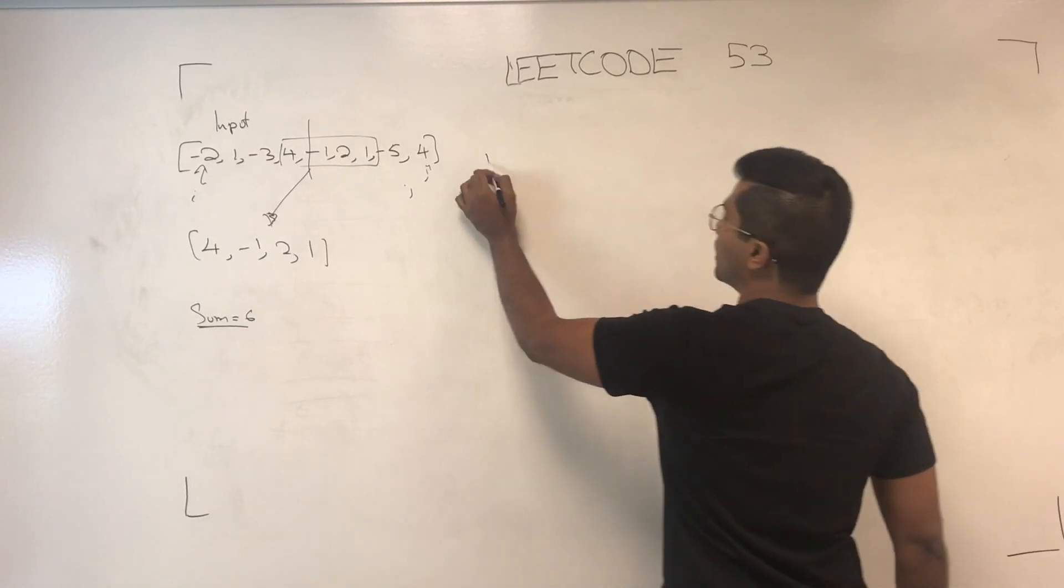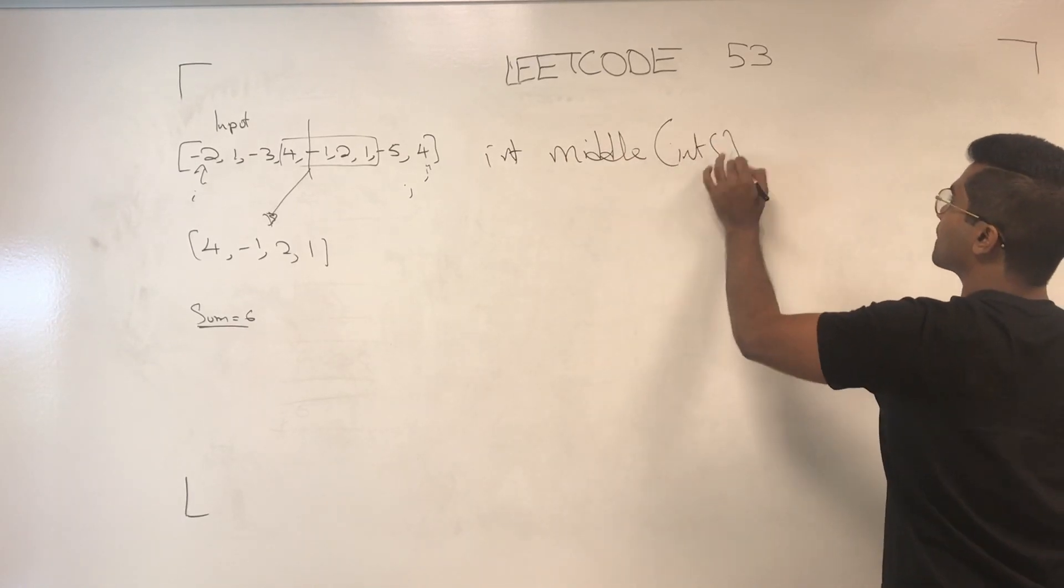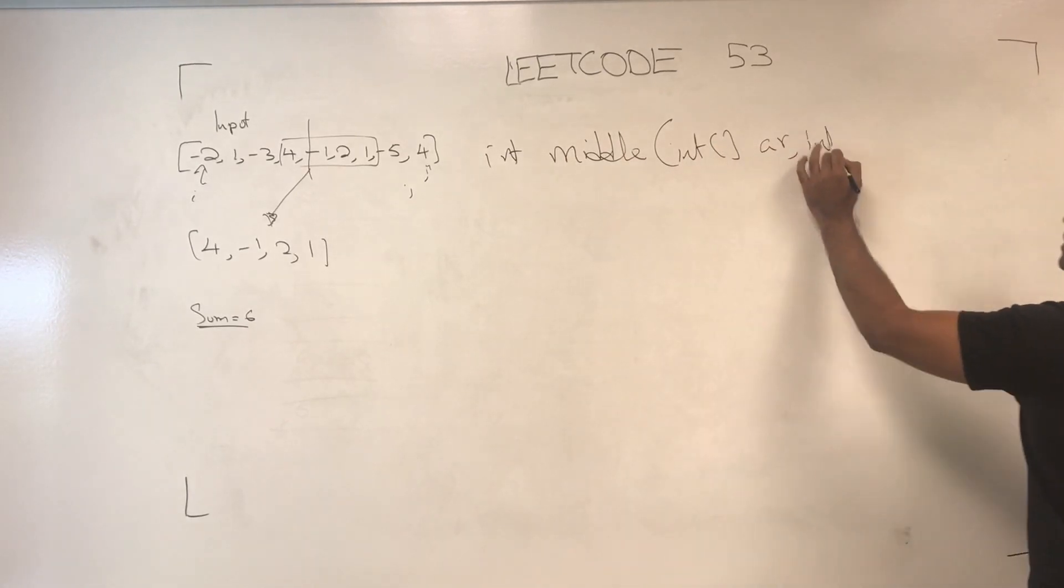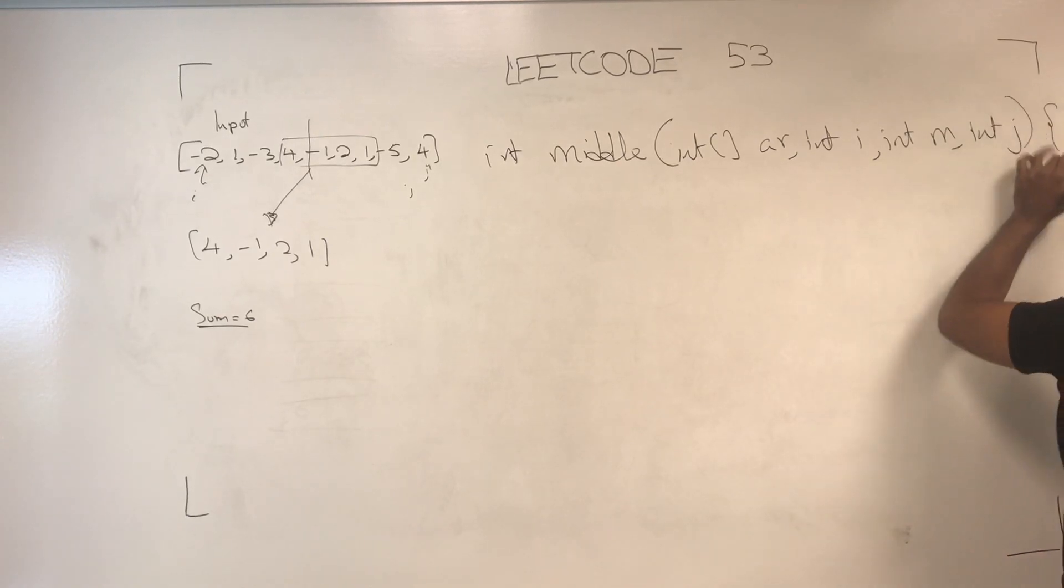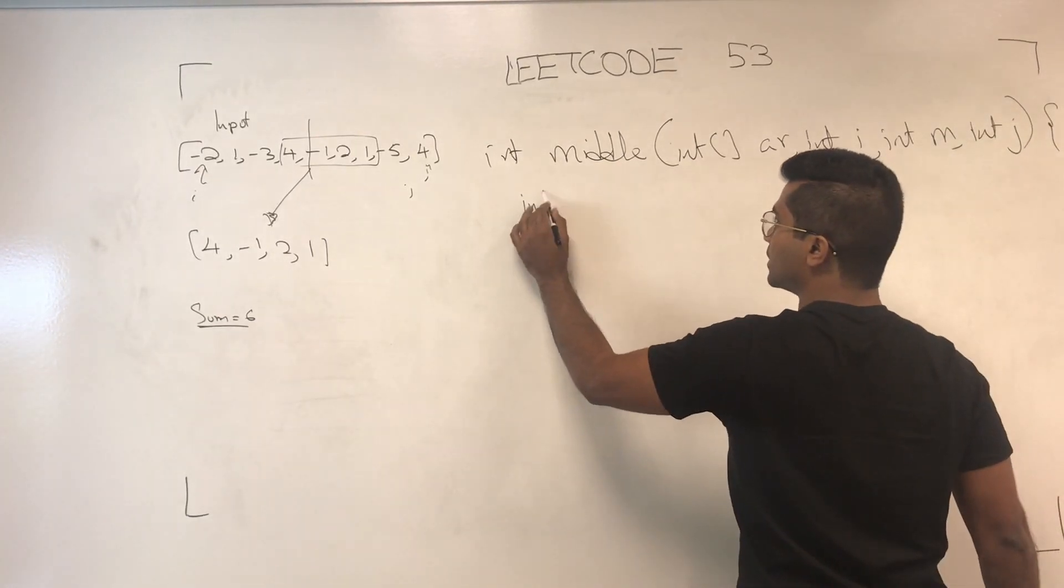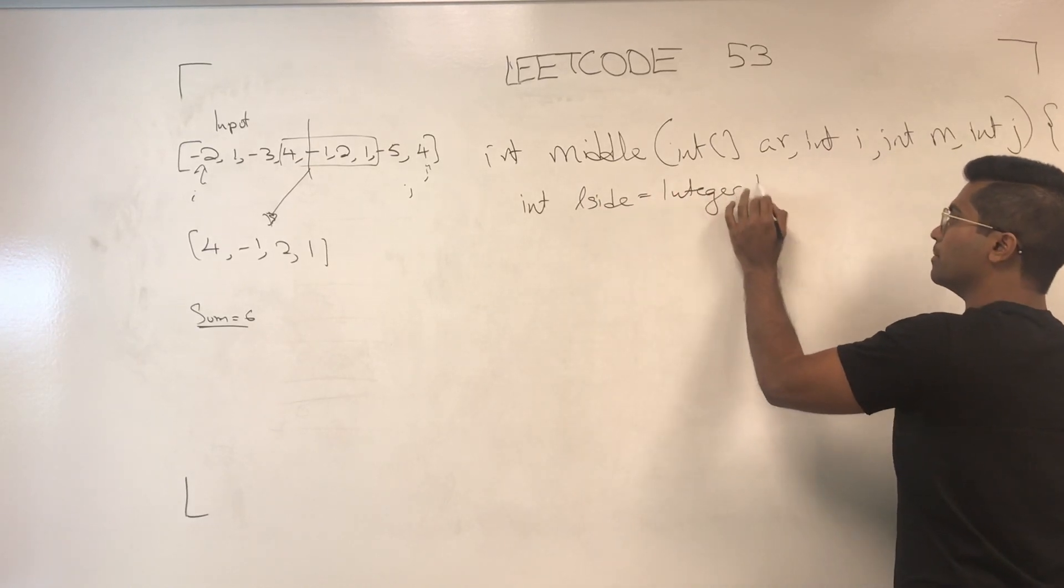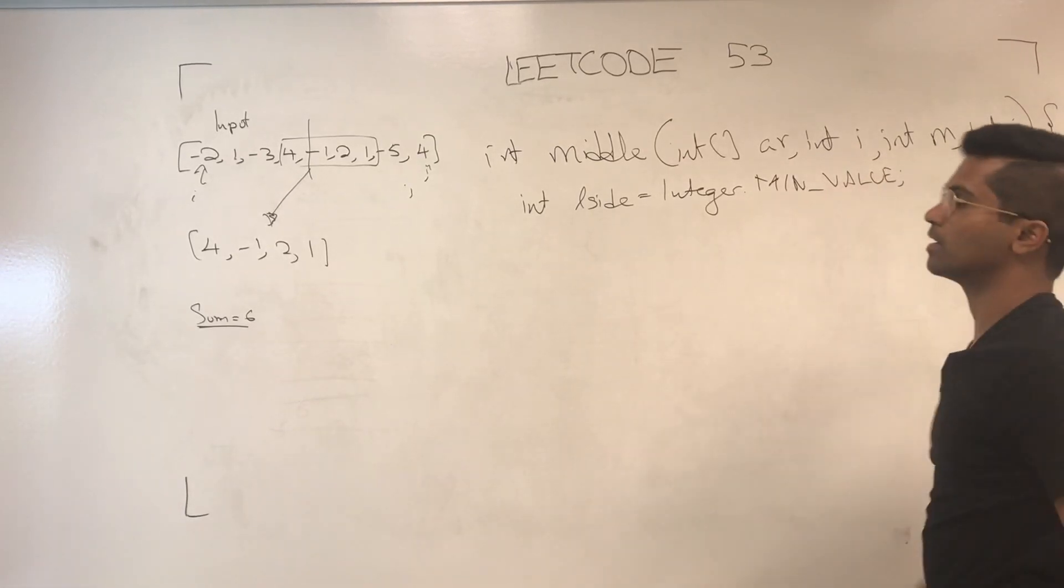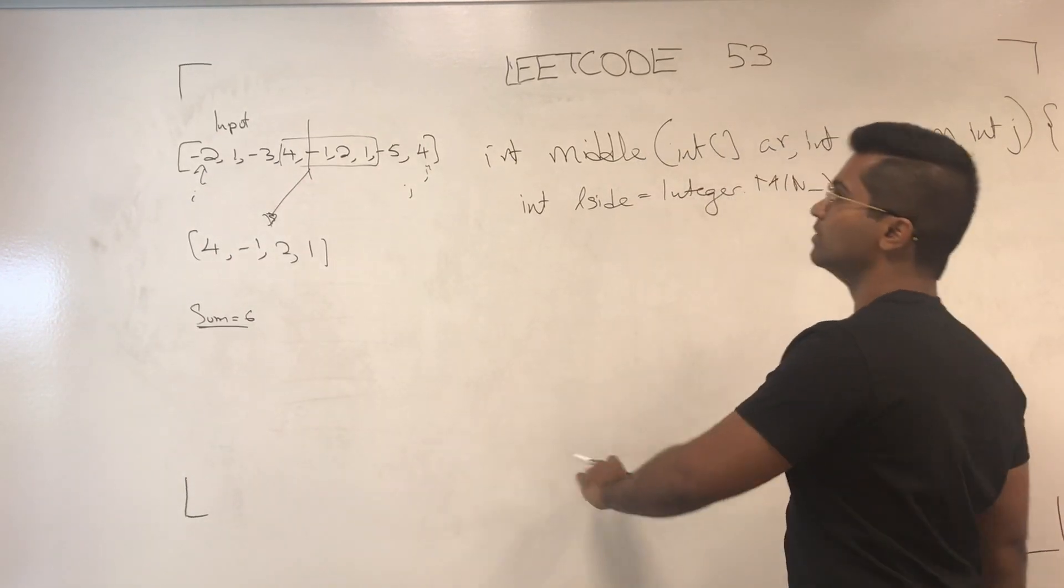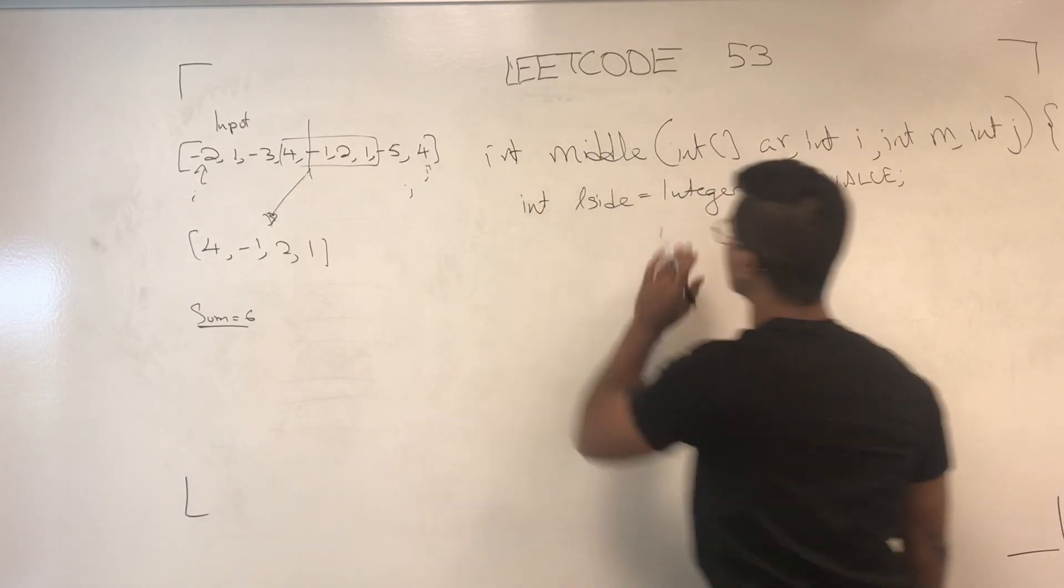So, int middle, int i, int n, int j, int l side, is going to be integer dot min value, and this is pretty much to denote, hey, what's the best we can get? Even if it's just a 1, which in this case it is, if we just take 4, it's better than the minimum.